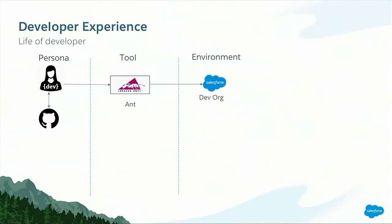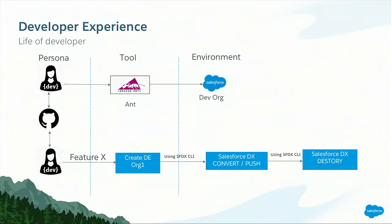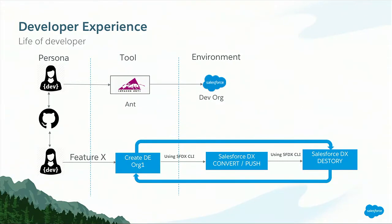Let's see how Salesforce DX can help this developer. She's the same developer, but now she uses Salesforce DX. She's working on Feature X and creates a scratch org in Developer Edition. Using CLI commands, she converts her app into DX format, and then using the convert command, she can push the code and destroy the org as needed. This is an iterative process — as per her needs, she can create a new org and destroy it per business needs. This is the power of DX that enables developers to create orgs as per business needs.